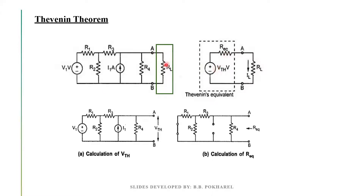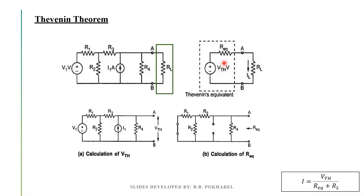If you have the current source in the circuit, you can see the current source supports the whole circuit. It's completed. We will be able to make this circuit. What is the current ILO? It is called IL. We have to make the current IL. We have to make the R equivalent. We will be able to find the V equivalent. We will simply calculate the current value, which is voltage divided by resistance.